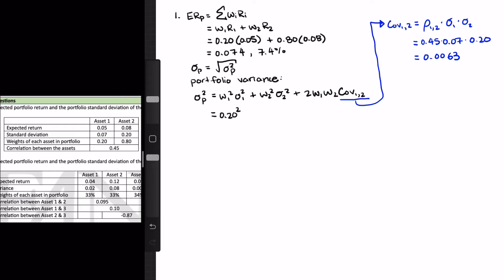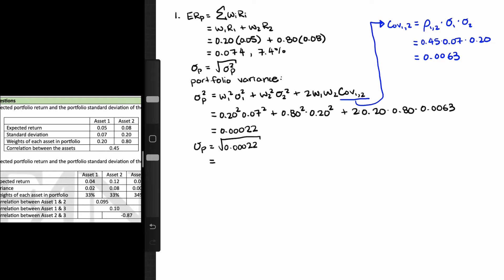Now we have everything we need, so let's plug it into the formula: 0.2 squared times 0.07 squared, plus 0.8 squared times 0.2 squared, plus 2 times 0.2 times 0.8 times the covariance of 0.0063. Calculating that all together, we get a variance of 0.00022, and the standard deviation of the portfolio is the square root of that, which gives us 0.015, or 1.5%.